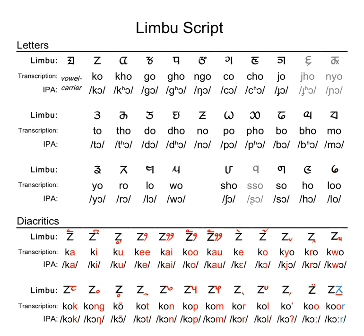The Limba script was added to the Unicode standard in April 2003 with the release of version 4.0. The Unicode block for Limba is U+1900 to U+194F.